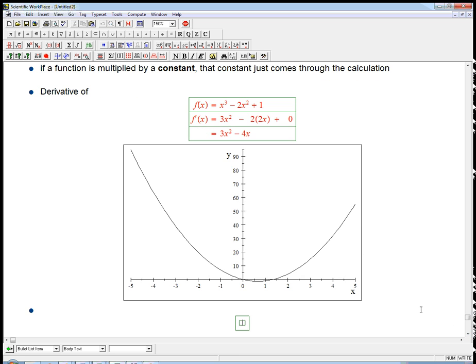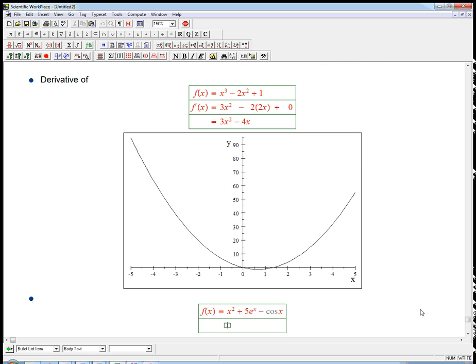Let's just do another example real quick. What if we had f of x was equal to something funky, x squared plus 5e to the x minus cosine x. Then what's the derivative of that going to be? Again, anytime you see a sum or difference, it's just going to come through. And that constant, because it's a constant, is just going to pop out. So the derivative of x squared, if we look back at our table, it's 2x.